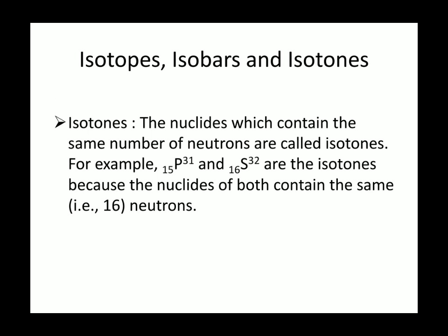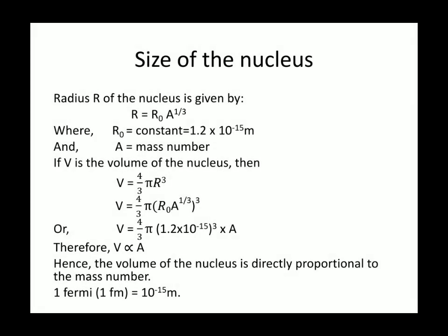Isotones: the different nuclei, called nuclides, which contain the same number of neutrons, are called isotones. For example, phosphorus and sulfur are isotones, because the nuclides of both these two elements contain the same number of neutrons, that is 16.